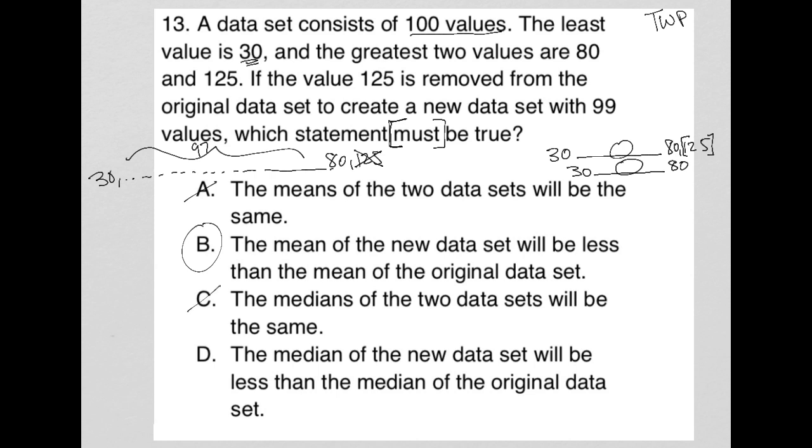Choice D, the median of the new data set will be less than... again, I have no idea what the medians are. There's no way to prove that. So that's gone. So choice B is the best answer to this question.